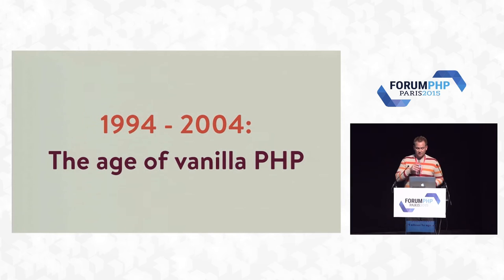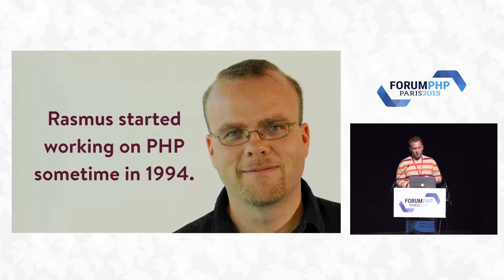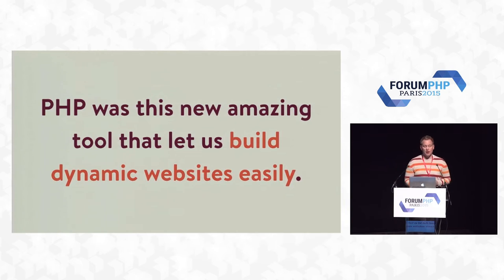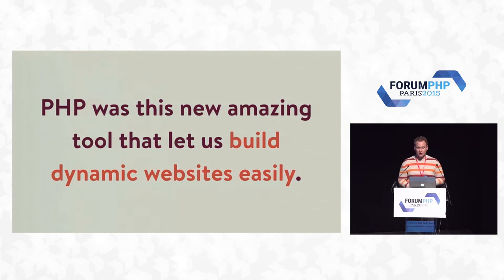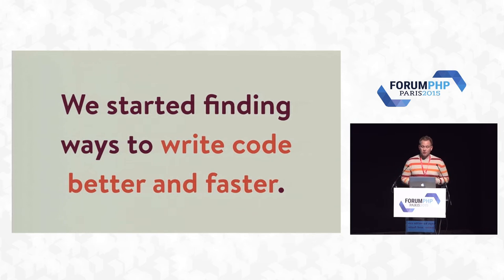I break PHP's history into basically three main time periods, or ages. 1994 to 2004: the vanilla PHP age. 2005 to 2012: the age of frameworks. And 2013 and beyond: the age of packages. In the vanilla PHP age, Rasmus started working on PHP sometime in 1994. It was this amazing new tool that let us build incredible dynamic websites, and we all hacked away for quite a while. Our code was pretty spaghetti — we mixed models, views, and controllers all in one file — but it was a pretty exciting time.